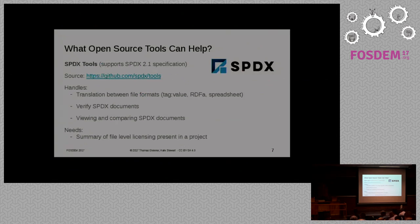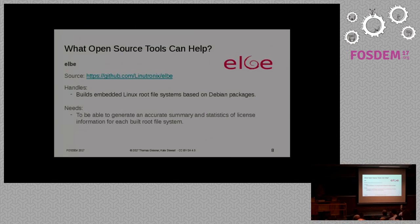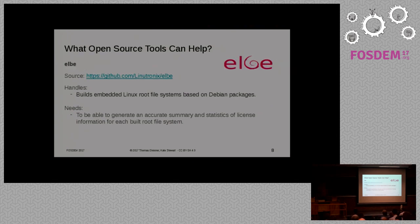There are also the SPDX tools, which let you convert between formats. Mostly they're used to validate that you actually have a valid SPDX file. One thing that looks like it's needed is a tool that takes an SPDX file and just summarizes the licensing information. There are also research projects looking at whether licensing is consistent. And the other open source tool we've been looking at is the Alba system, which takes and builds a Linux root file system based on Debian packages, and needs accurate license summaries each time it does a build.